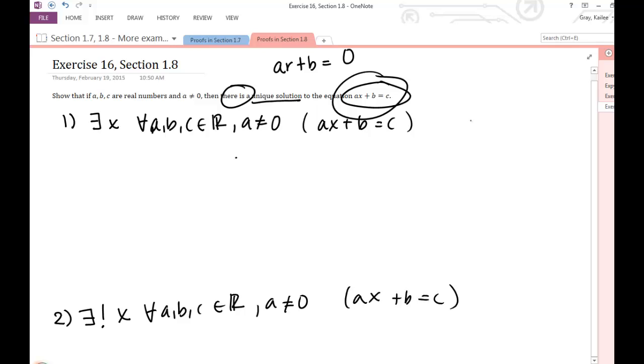For the existence part, we're just going to go through and solve for x and find a way to represent that solution. We're trying to solve this equation for x, and this condition here will be important for us. So if I want to solve it for x, I'm going to start by subtracting b from both sides, and then I'll have ax is equal to c minus b.